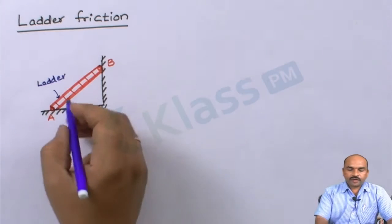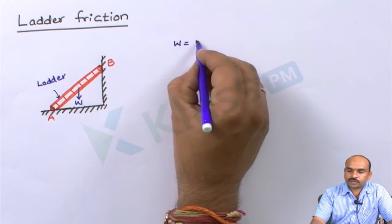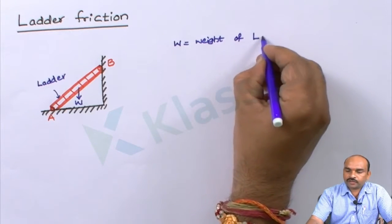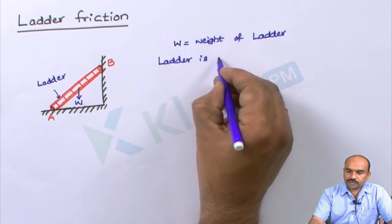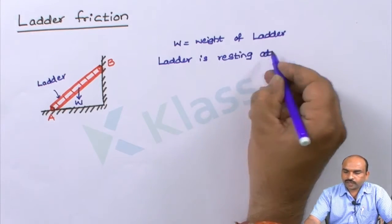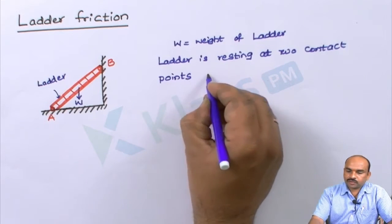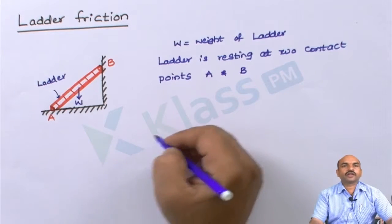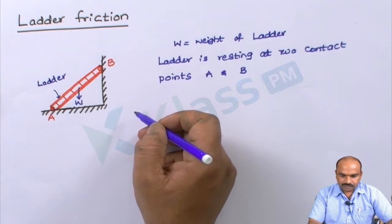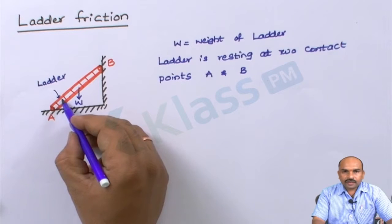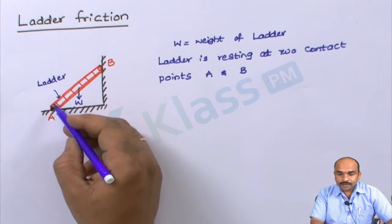The weight of the ladder always acts vertically downward, where W is the weight of the ladder. This ladder is resting at two contact points, A and B, as you can see in the diagonal. Because of the weight of this ladder, there will be reactions. The ladder's weight at point A means the ladder is pushing the floor in the downward direction.